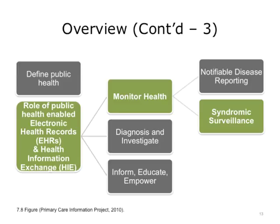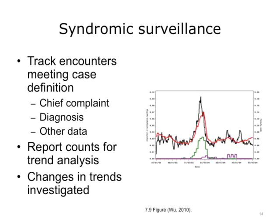Syndromic surveillance is another method that may be employed. It involves the use of pre-diagnostic data to identify syndromes consistent with communicable illness. Trends in these syndromes can be tracked over time, and abnormal increases investigated as a means to potentially detect emerging disease outbreaks before they are detected through traditional methods — in other words, laboratory-confirmed cases of disease. The image on this slide is an example of how syndromic surveillance compares with WHO viral isolate data during a recent influenza season. The peaks in the syndromic systems matched well with the influenza A isolate data.